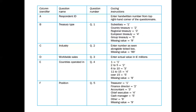Here is a screenshot of a code book. It shows a column identifier, question number, and instructions — for example, treasury type with its coded options, industry, and countries operated in with codes for ranges like two to five. This illustrates the importance of a code book: you must have it prepared before you go and collect data through questionnaires.